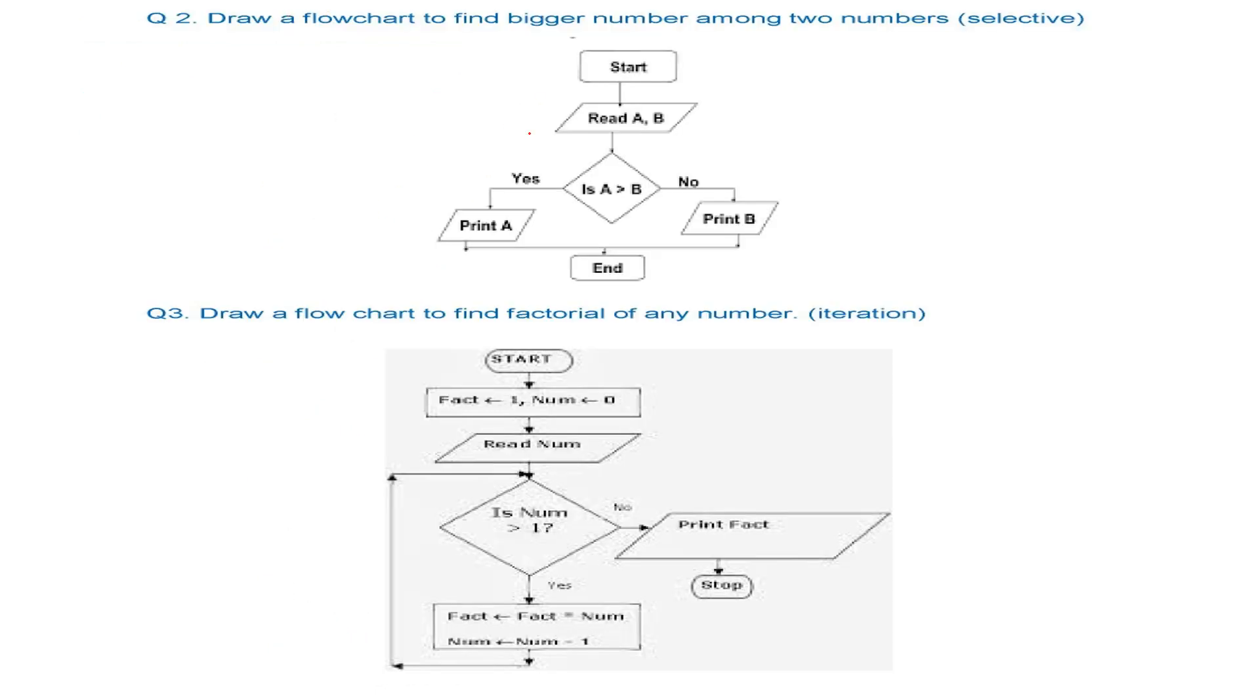Now a flowchart to find the bigger number among two numbers. So if 2 and 3 is to be checked, we know that we can check 2 greater than 3. Because 2 is not greater than 3, then 3 is bigger, otherwise 2 is bigger. So this is the logic we are going to use.